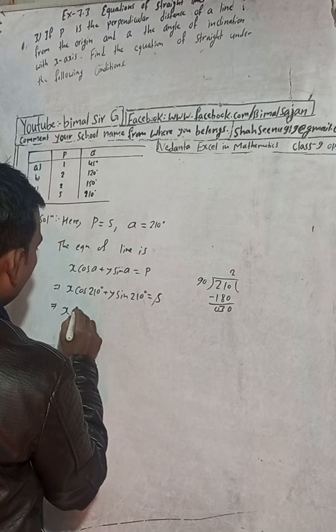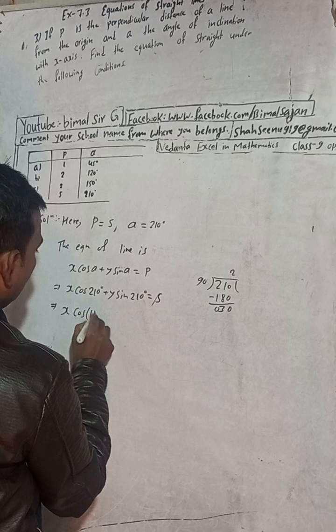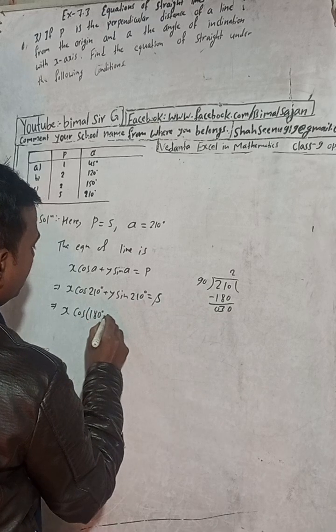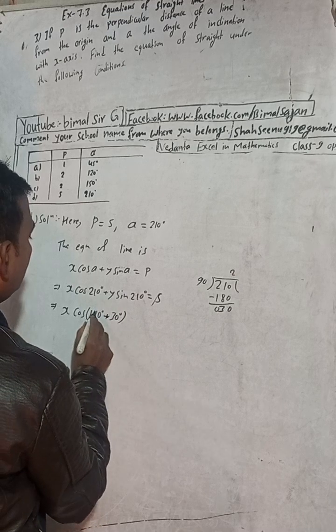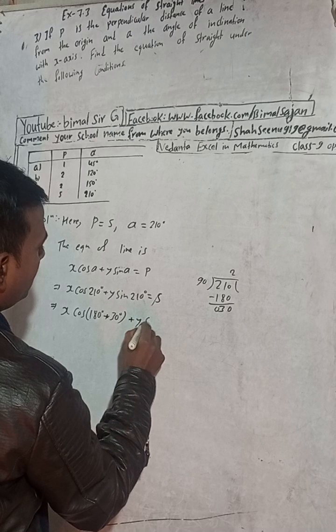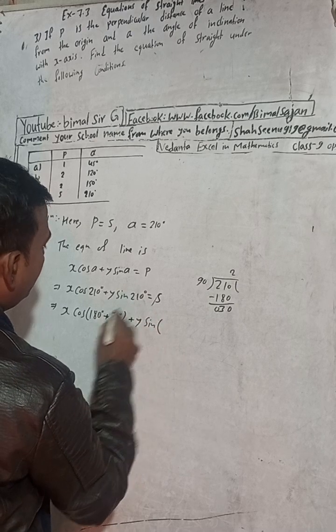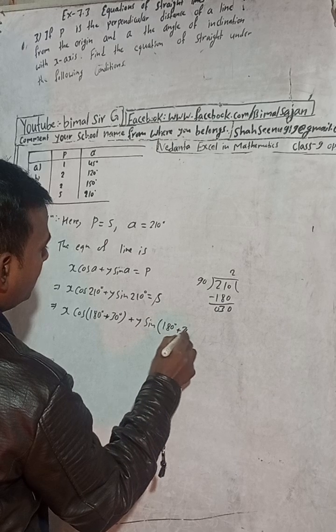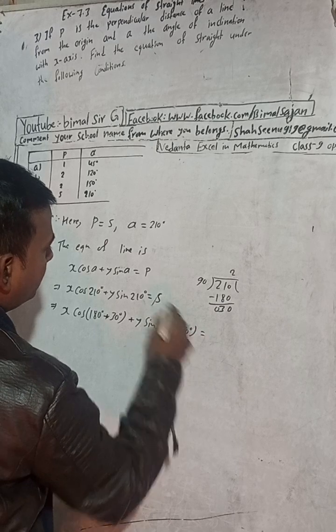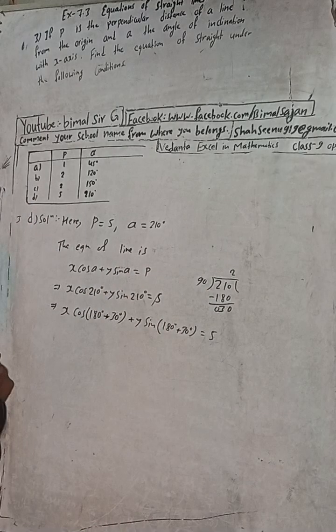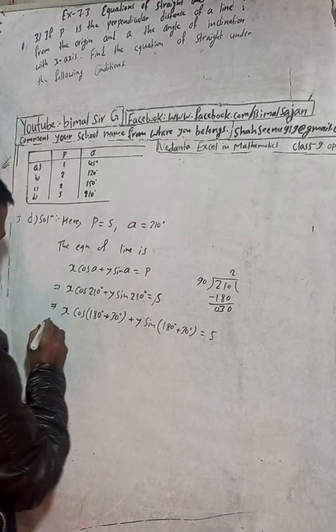That means we can write as cos 180 degrees plus 30 degrees, which equals 210 degrees. Plus y sin, again 210 degrees can be written as 180 degrees plus 30 degrees equals 5.